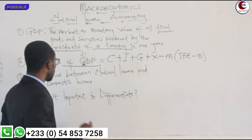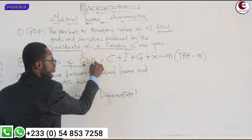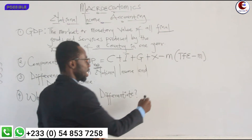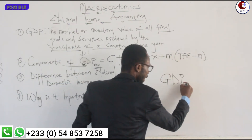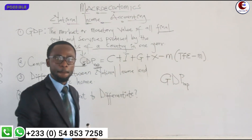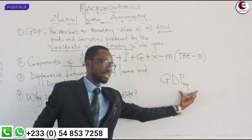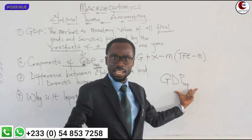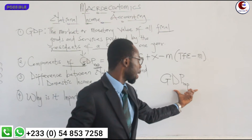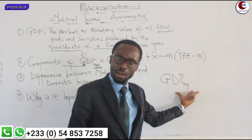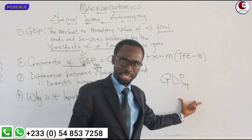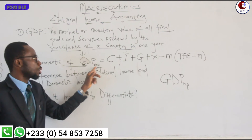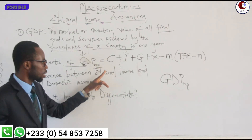When you put all the components together, you get GDP at market price. GDP at market price — written as GDP subscript MP — uses the prevailing market price, which includes indirect tax. When you combine all the components, you get gross domestic product at market price.